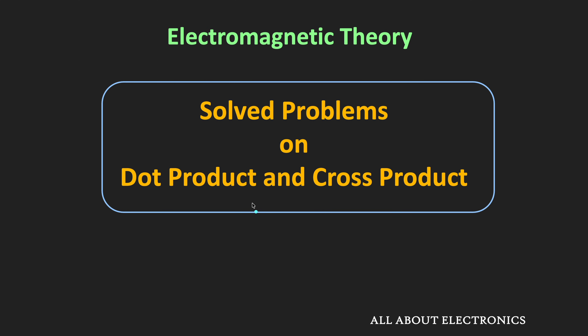Welcome to the YouTube channel all about electronics. In the previous video we understood vector multiplication and saw that there are two types: the dot product and the cross product. In this video, let us see some solved problems based on the dot product and the cross product of vectors.